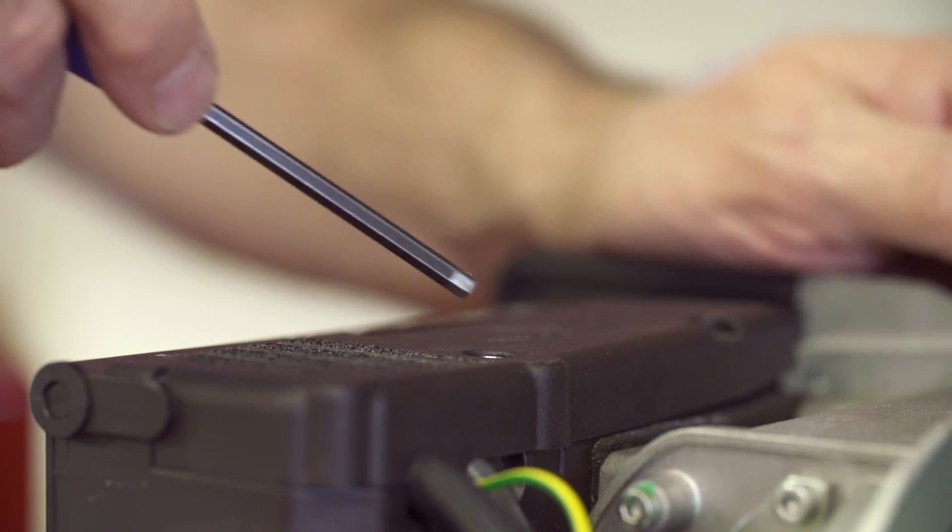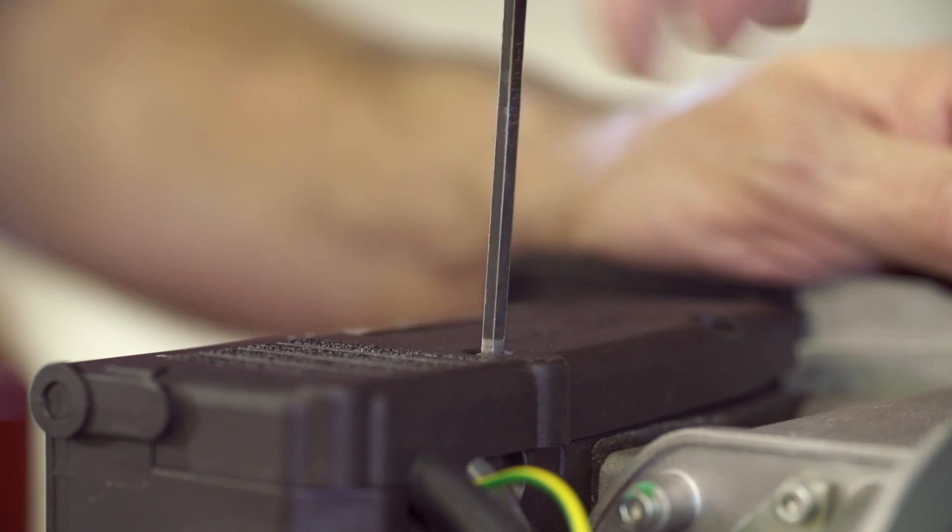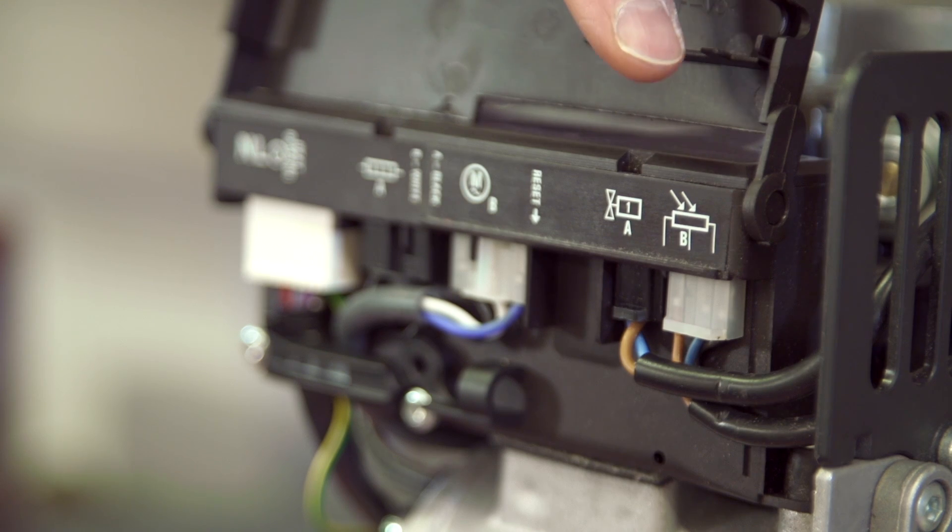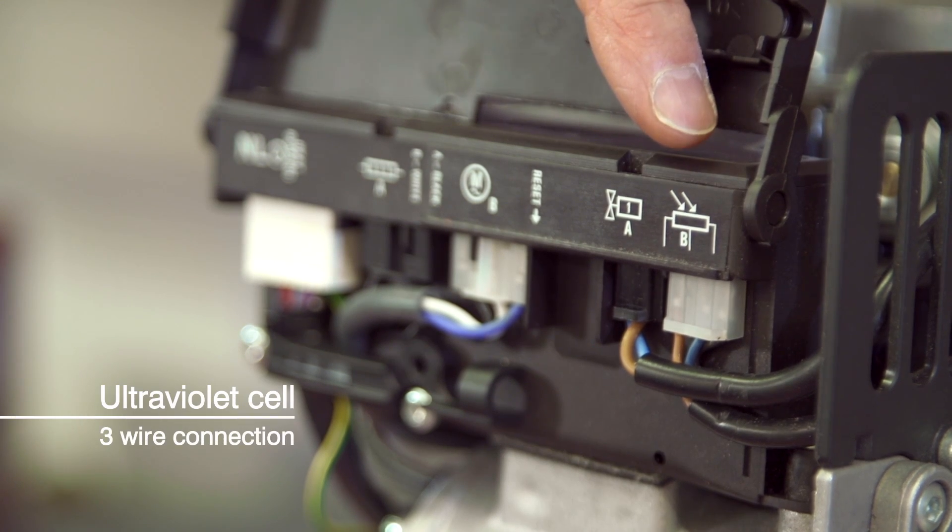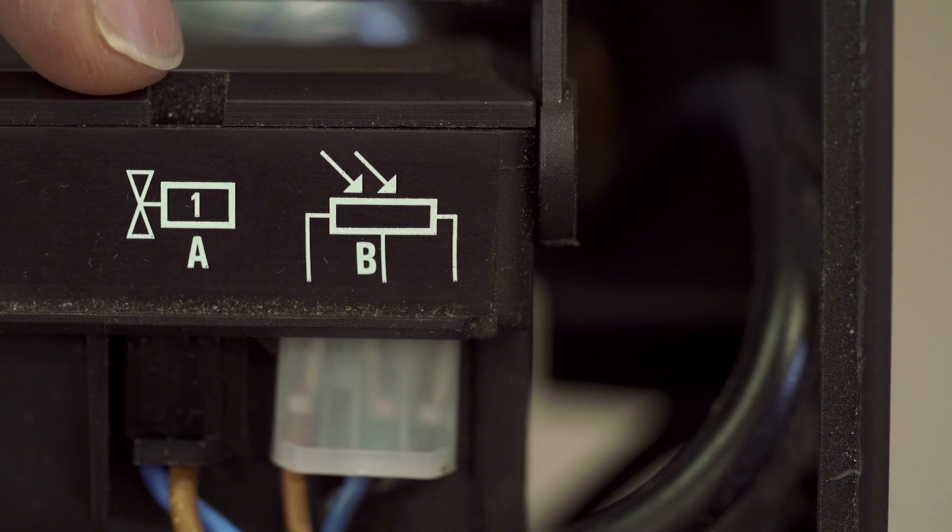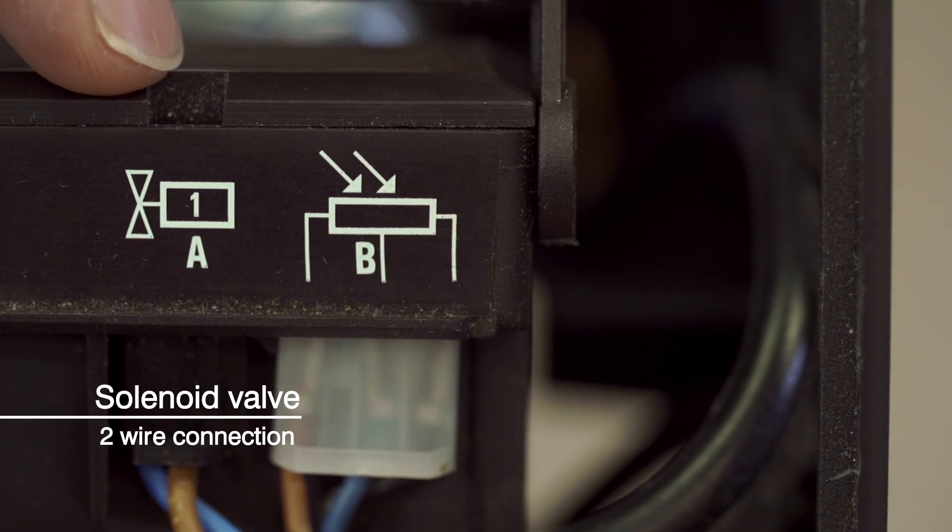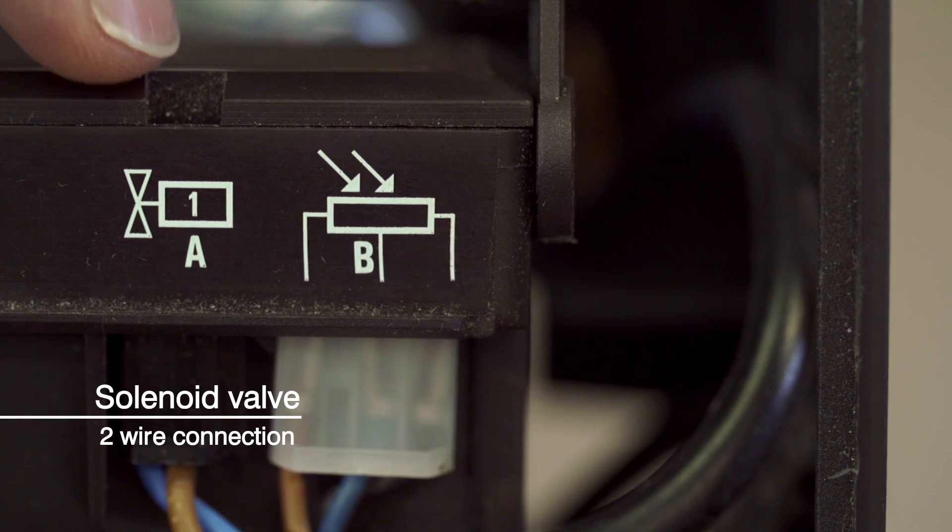Opening up the cover, you'll see the connections are very much like the analog box, except that the UV cell has a 3-wire connection. Next is the solenoid valve connection, a 2-wire connection, the same as the analog box.